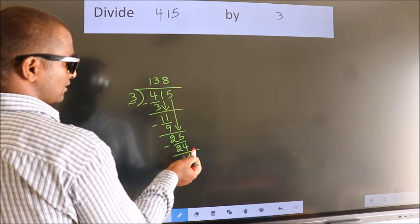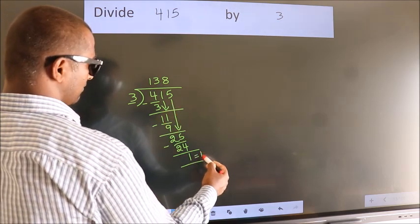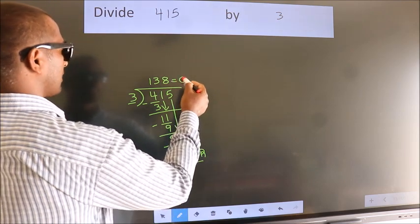No more numbers to bring it down. So we stop here. This is our remainder. This is our quotient.